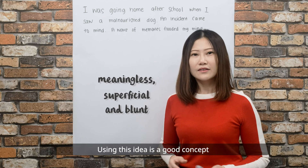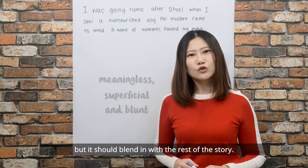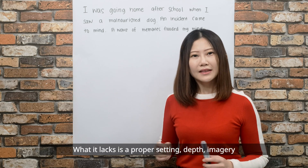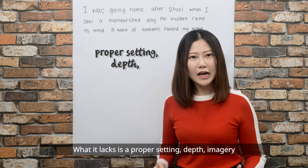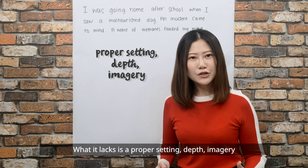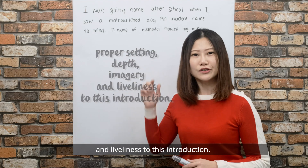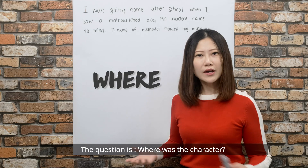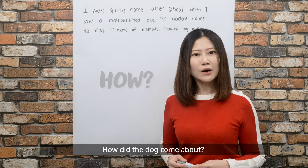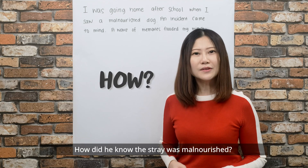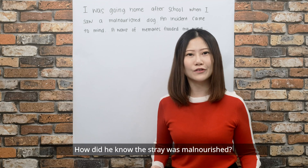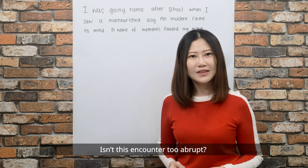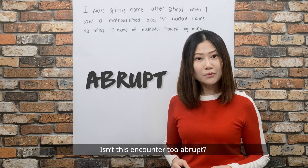Using this idea is a good concept, but it should blend in with the rest of the story. What it lacks is a proper setting, depth, imagery and liveliness to this introduction. The question is: where was the character? How did the dog come about? How did he know the stray was malnourished? And what makes this dog so unusual? Isn't this encounter too abrupt?